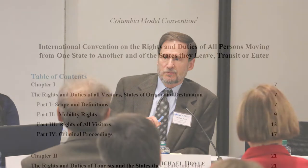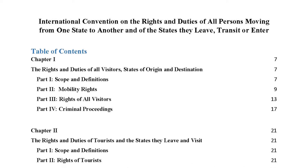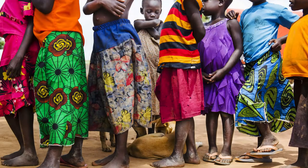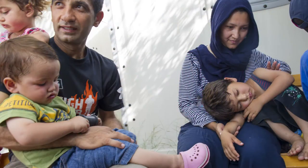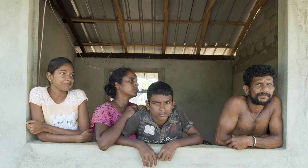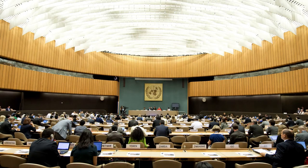At Columbia, he co-directs a migration project which, together with an international commission, is leading the drafting of a model International Mobility Convention that defines the rights and responsibilities of individuals who cross borders and the states they leave, transit, and enter. Professor Doyle sat down with CMS to discuss the International Mobility Convention, including the need for the convention, the process behind its drafting, and next steps.